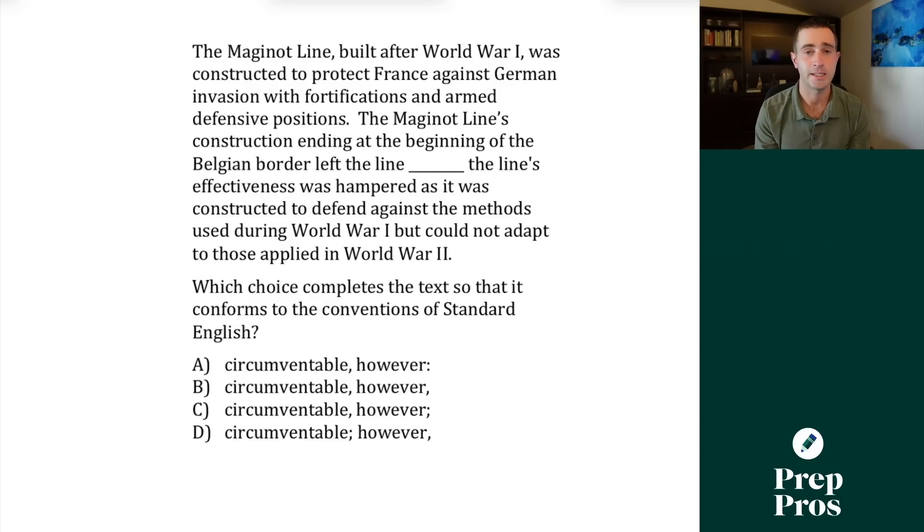Now the next thing you're going to see on your digital SAT are what I like to call tricky transitions. Now these are tricky because they involve your understanding of how to properly join clauses together, along with your contextual understanding of where the relationship with the transition is in the passage. The first thing I want you to always do if you see one of these is cover up the transition and the punctuation and check the clauses before and after. So we're going to read from the Maginot lines all the way to circumventable. The Maginot lines constructed ending at the beginning of the Belgian border left the line circumventable. Well, that's an independent clause, full sentence.